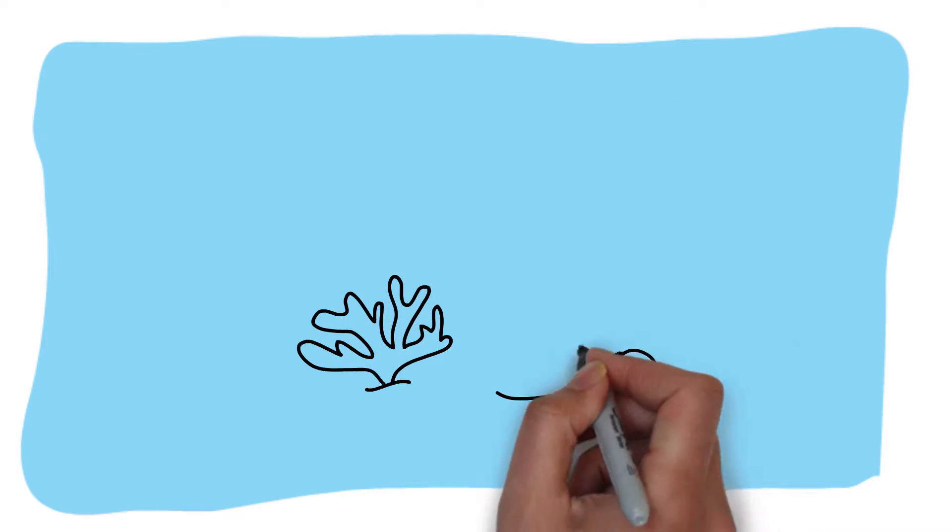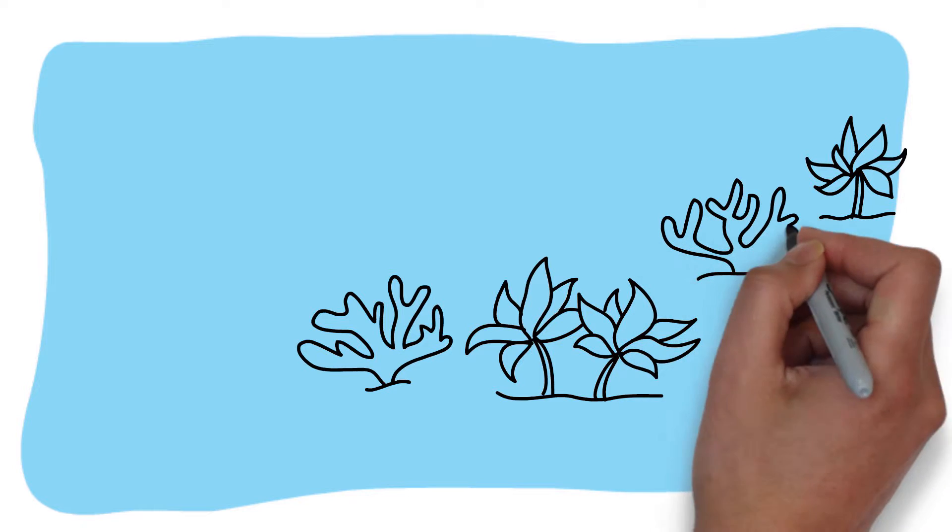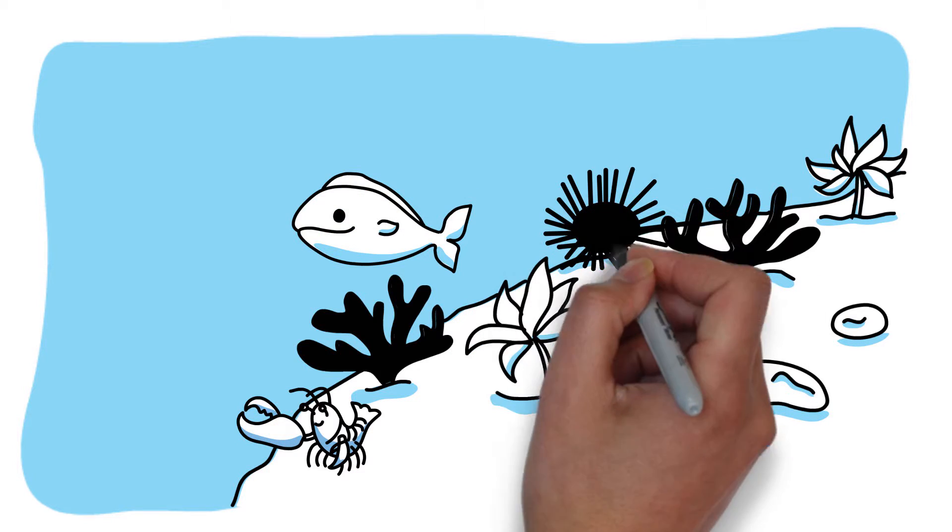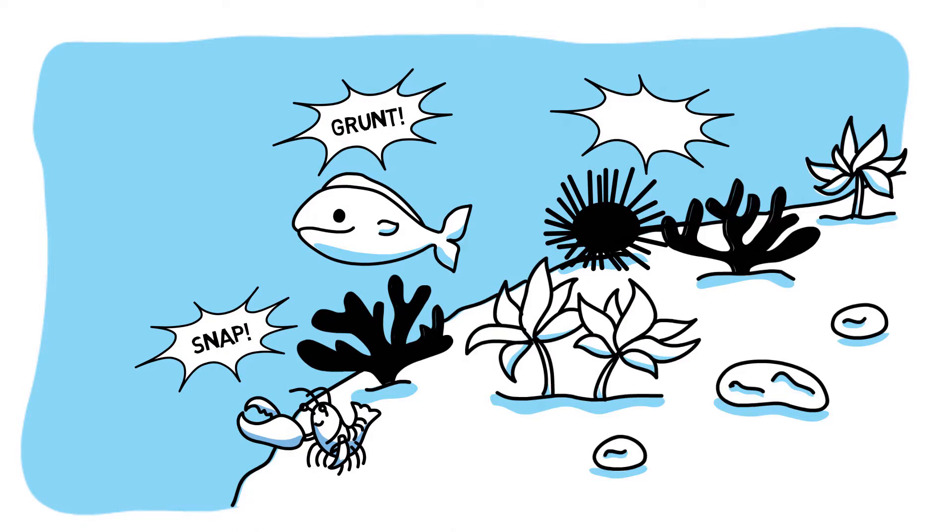Despite how most people picture the ocean as a silent place, a whole variety of sounds can be heard underwater. For example, coastal reefs are full of sounds made by animals such as snapping shrimps, fish, and sea urchins.